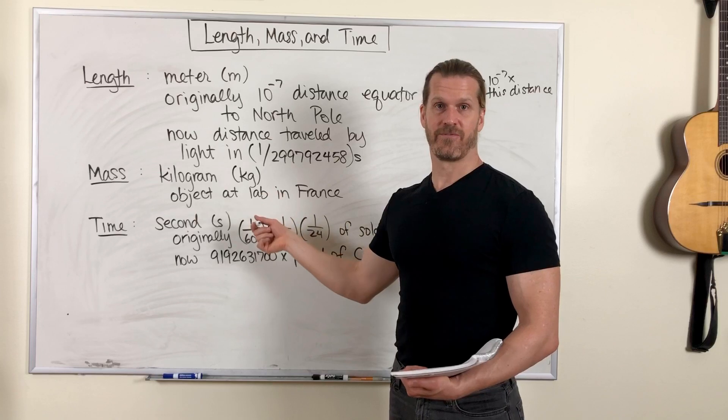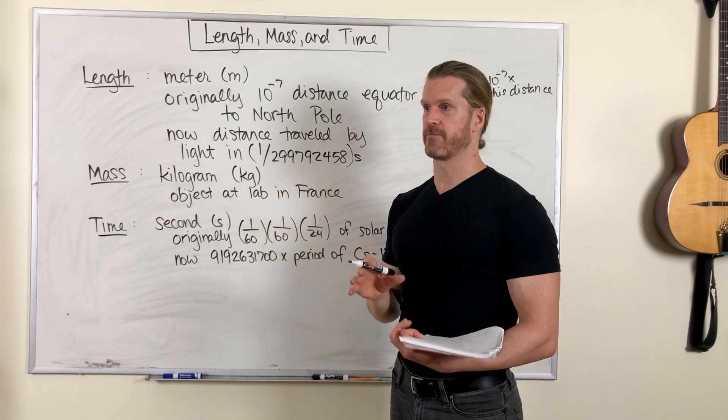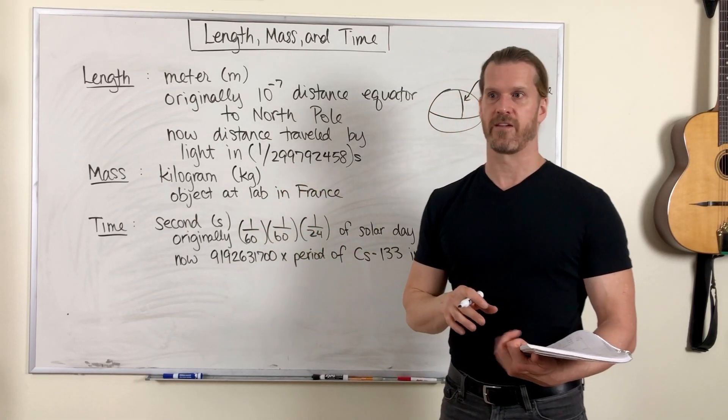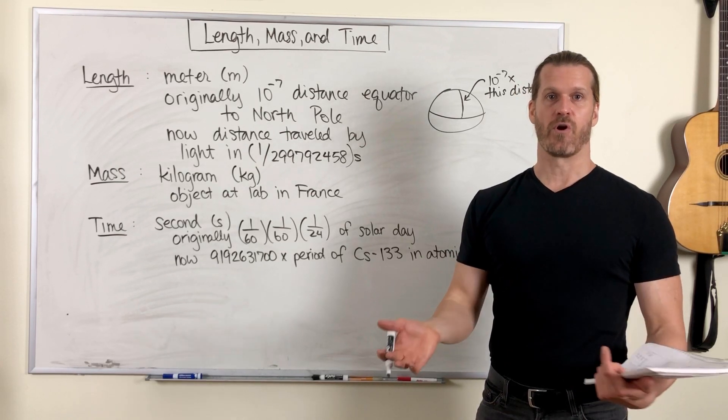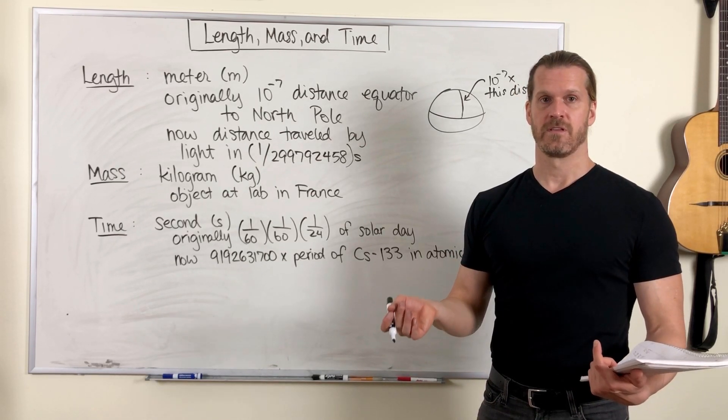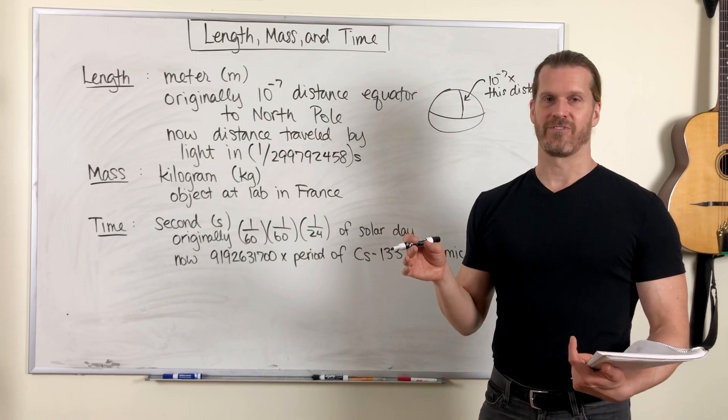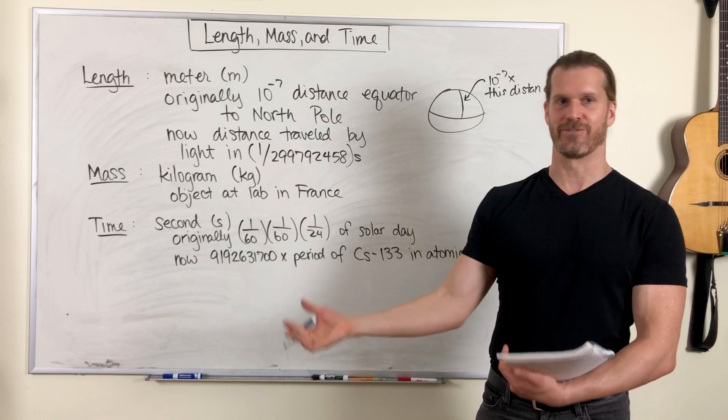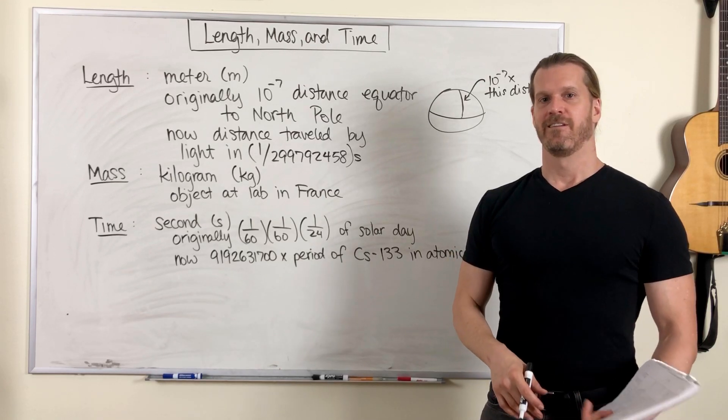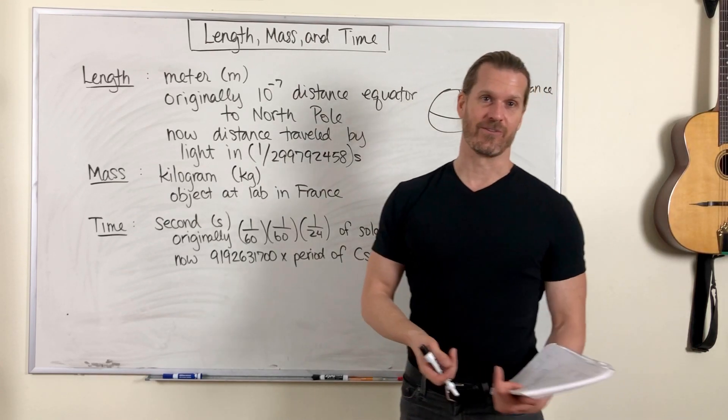There's a lab in France where there's a metal bar made of platinum and iridium. This bar is defined as a kilogram. All other kilograms are defined in terms of that bar. You gotta weigh your kilogram next to that one. That's how you know it's a kilogram.